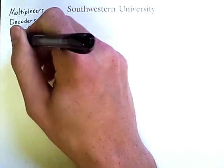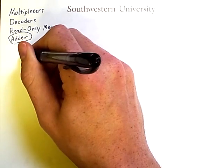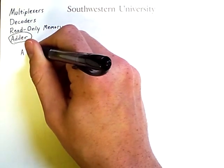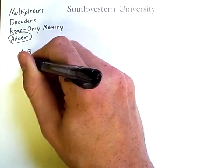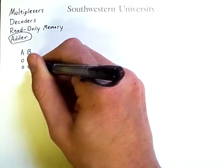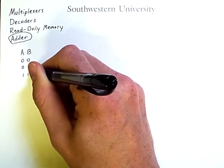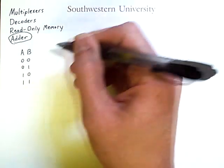Now adders will be the topic of this video. So an adder does what you think it would do. It takes two bits, adds them together. So if we have two input bits, a and b, we can construct a truth table of how we expect our adder to behave.